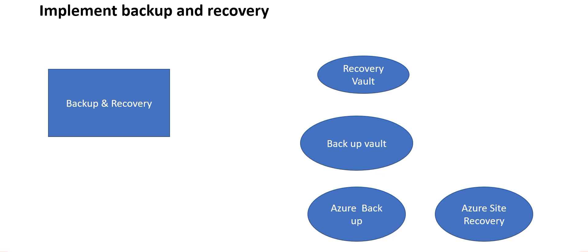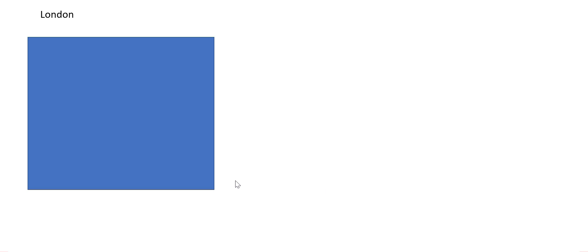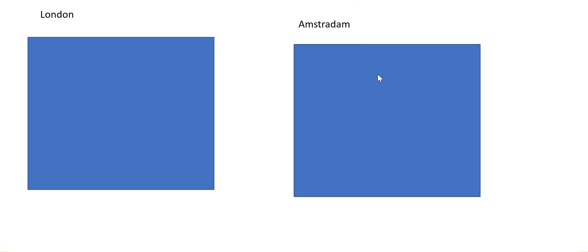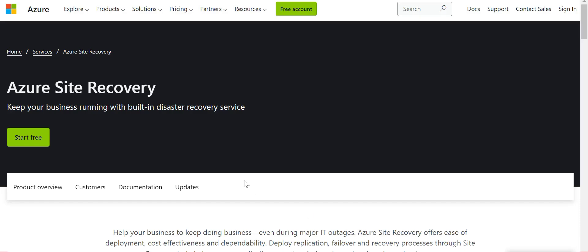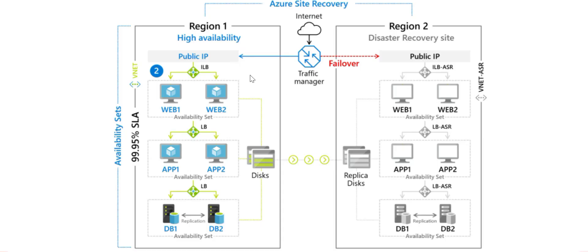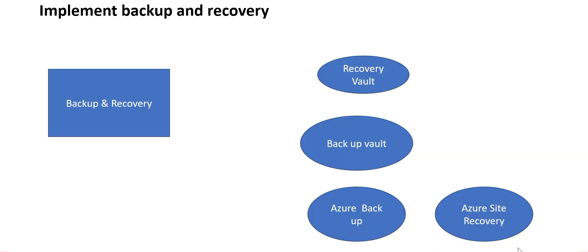Azure Site Recovery: imagine you have a site in London and something happens — network issues or climate events that block the network — making applications on that site unavailable. So you have an alternate site in Amsterdam for Azure Site Recovery. What Site Recovery does is keep your applications and business running with a built-in disaster recovery service. It works like having region one and region two always operating in a failover mechanism; if region one fails, all services in the disaster recovery site — region two — start, and this recovery is managed through Azure Site Recovery.